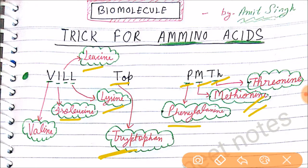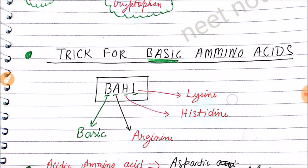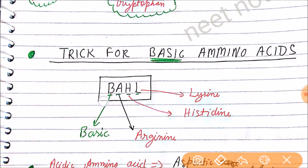The next trick is for remembering all the basic amino acids, which is quite important. Our trick is 'BAHL': B for basic, A for arginine, H for histidine, and L for lysine. This is the method you can follow to remember arginine, histidine, and lysine.